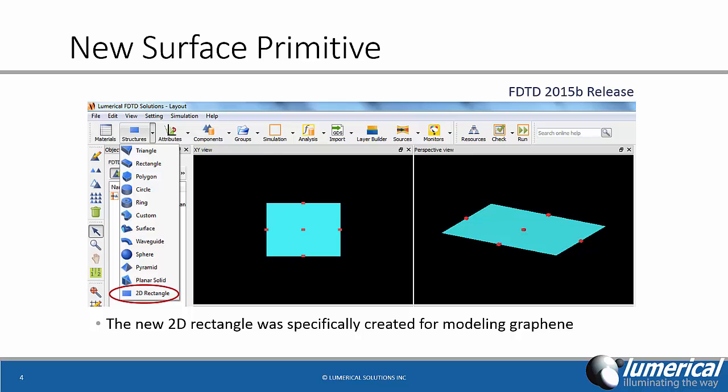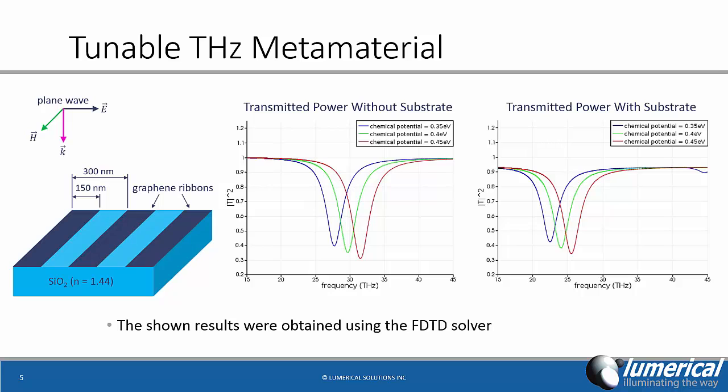These two new components will allow you to model graphene sheets in a straightforward manner, and here we will briefly show you two examples of how this new functionality can be used. The first example shows you how you can use a periodic array of graphene ribbons to create a tunable terahertz metamaterial.